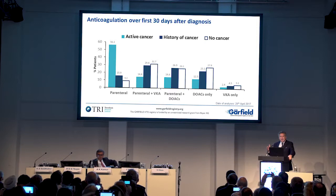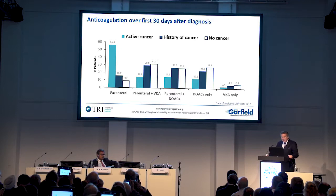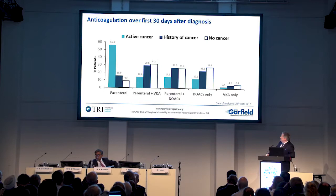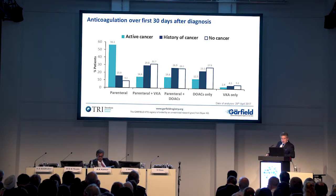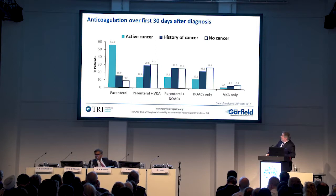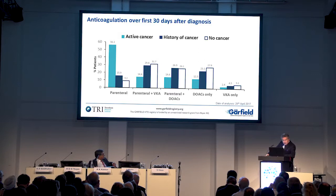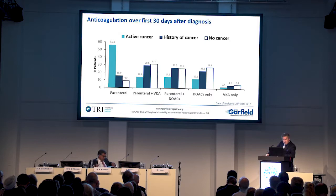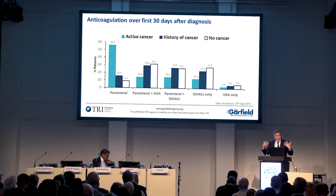What was the anticoagulation pattern over the first 30 days after diagnosis? Not surprisingly, in the active cancer group there is a preponderance of parenteral anticoagulation, and much less so in the history of cancer or no cancer groups. In the active cancer group, DOACs alone were used in 12.5% of patients, and a parenteral-plus-DOAC approach in others — so overall, about 20% of patients with cancer had DOACs coming into play as initial therapy.